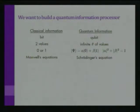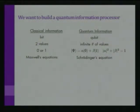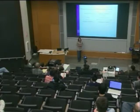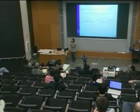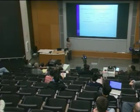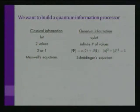In quantum information, we store information in a qubit. The qubit can take on an infinite number of values — it's an arbitrary superposition state of 0 and 1. We write the wave vector as alpha|0⟩ plus beta|1⟩, with the condition that alpha squared plus beta squared equals 1. Alpha squared is the probability our qubit is in state 0, beta squared is the probability it's in state 1, and the evolution is governed by Schrödinger's equation, no longer Maxwell's equations.